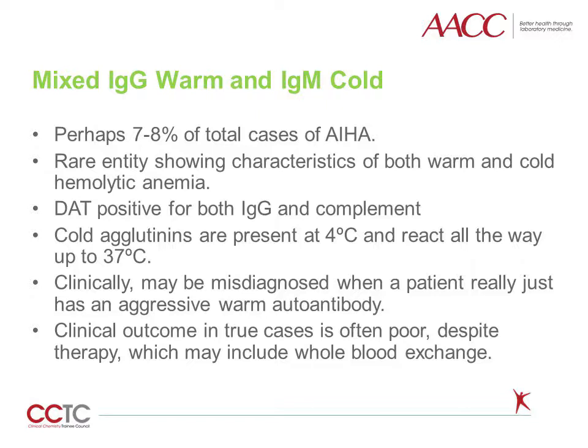Mixed IgG warm and IgM cold hemolytic anemia, generally called mixed autoimmune hemolysis, is rarer than warm autoimmune hemolytic anemia or even cold agglutinin syndrome. In these cases, the DAT is positive for both IgG and complement, and cold agglutinins are detectable both at cold temperatures and at body temperature. Severe cases of warm AIHA are sometimes miscategorized as mixed hemolysis. Unfortunately, true cases of mixed hemolytic anemia are associated with a very dismal prognosis and there is no clear effective treatment, although some practitioners have limited success performing whole blood exchanges. The most important consideration is bringing any underlying disease under control as rapidly as possible.